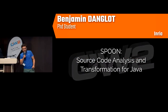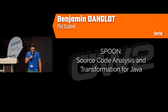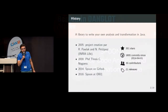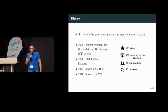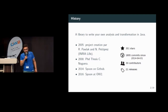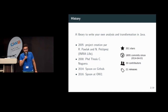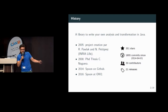Hello everybody. I am Benjamin D'Anglo and I will present Spoon. I will start with a little bit of history. Spoon has been created by Renaud Pollack and Nicolas Petitpré in 2005 as a research project at INRIA. Then Carlos Nogueira did his PhD thesis. Spoon arrived on GitHub in 2014 and Spoon joined the OW2 experience last year.